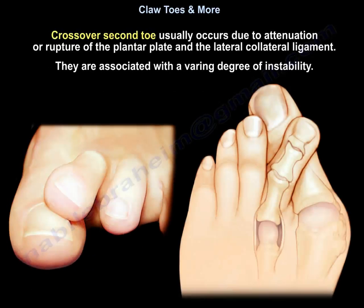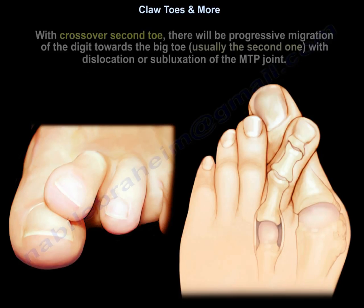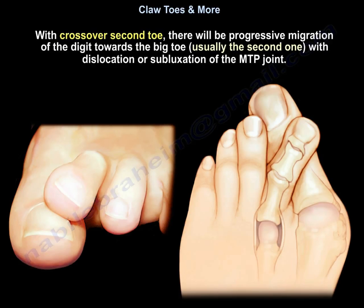The cross-over second toe usually occurs due to attenuation or rupture of the plantar plate and the lateral collateral ligament, and is associated with a varying degree of instability. There will be progressive migration of the digit towards the big toe, usually the second toe, with dislocation or subluxation of the metatarsophalangeal joint.